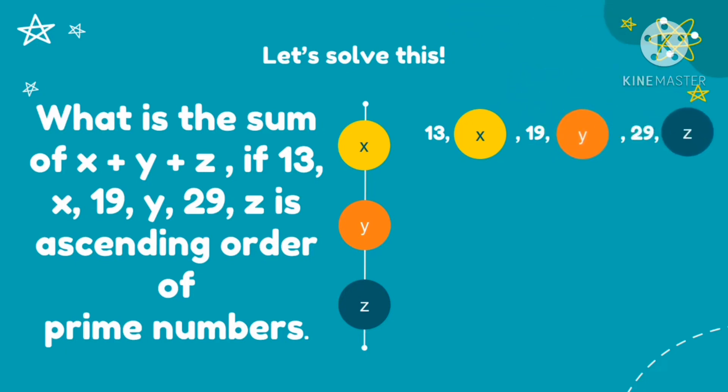So to find the value of x, y, and z, what numbers come after 13 that are prime numbers? So x is equal to 17. Plus, so what prime number comes after 19? That is 23. And what prime number comes after 29? And that is 31. So we have now the value of x, y, and z.